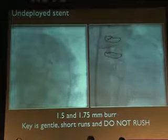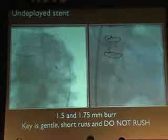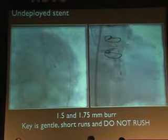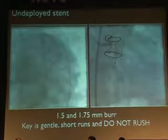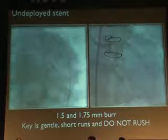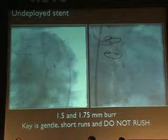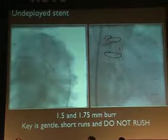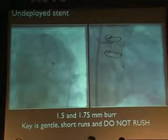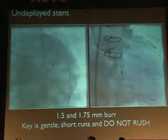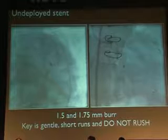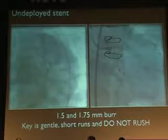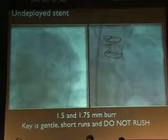We didn't have IVUS available that day. For undeployed stents, this is the only situation where I do a reverse technique — I start with a large burr and then go to a smaller burr. The logic, as Sandeep explained in an earlier presentation, is that when you take a small burr into an undeployed stent, the shaft of the rotational atherectomy burr can get trapped in the stent struts and you won't be able to pull it back. A large burr widens the mouth of the proximal stent and gives you better purchase with a smaller burr subsequently.